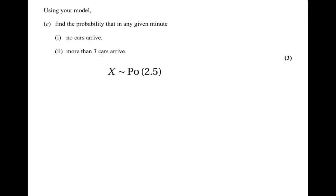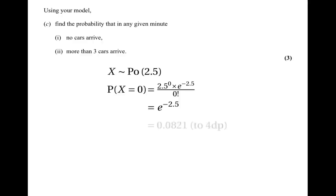Using the Poisson distribution with parameter 2.5, we find the probability that no cars arrive. The formula gives 2.5 to the power of 0 times e to the power of minus 2.5, divided by 0 factorial. Since 2.5 to the power of 0 and 0 factorial are both 1, this simplifies to e to the power of minus 2.5, which equals 0.0821 to four decimal places.